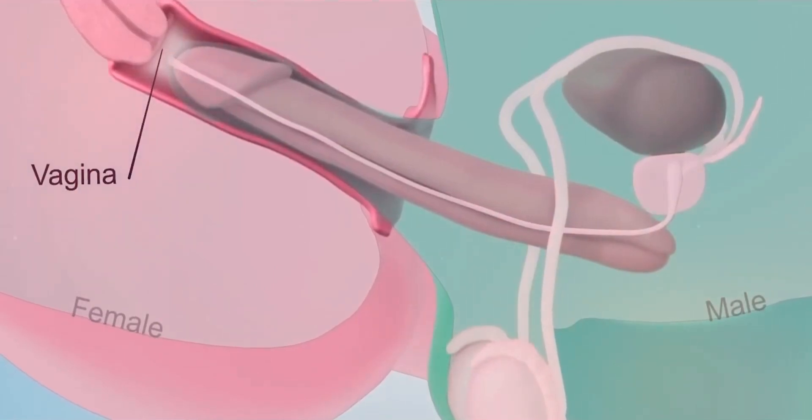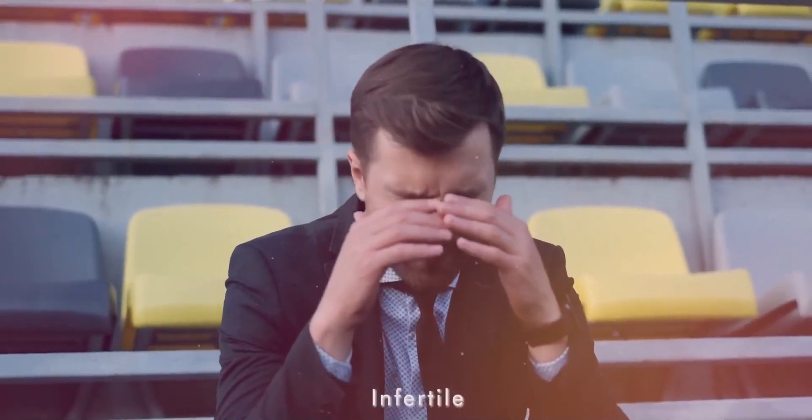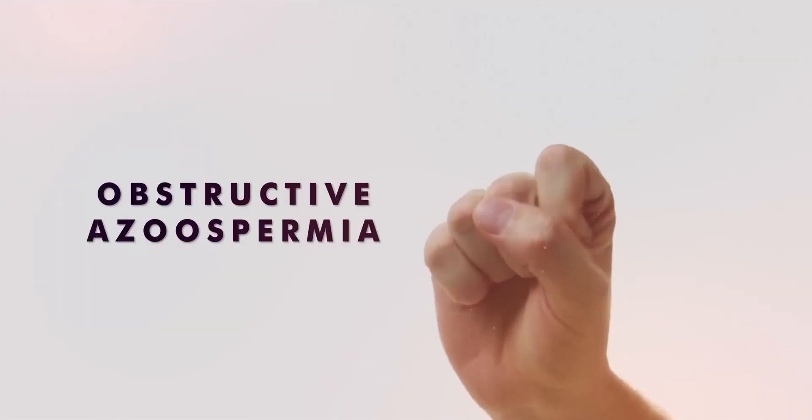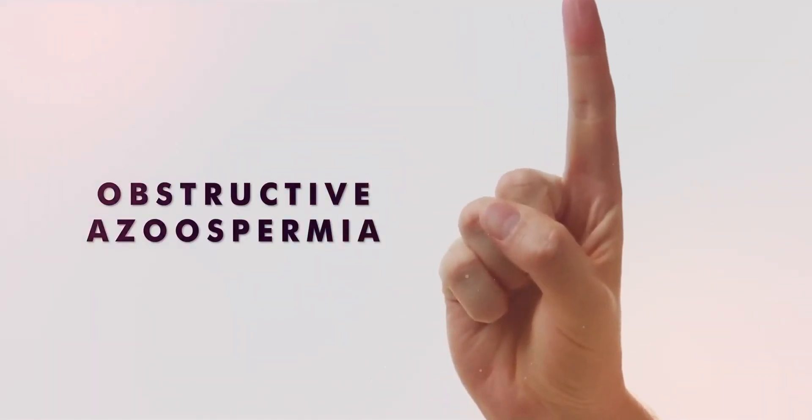But in azuspermia patients, sperms are not able to enter the semen, due to which such males are infertile. There are two types of azuspermia: 1. Obstructive azuspermia 2.